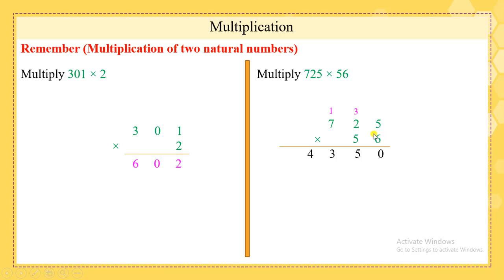Once you are done multiplying 6 with the digits above it, move to the next digit. Since 5 is in the tens place, we add a zero before continuing the multiplication. 5 times 5 is 25 — put 5 here and 2 above. 5 times 2 is 10, plus 2 is 12 — put 2 here and 1 above the 7. 5 times 7 is 35, plus 1 is 36.